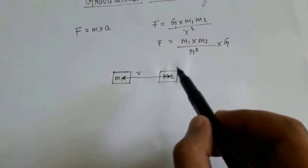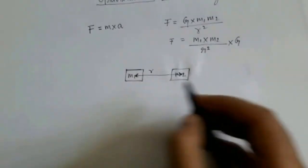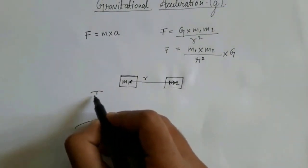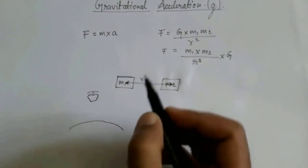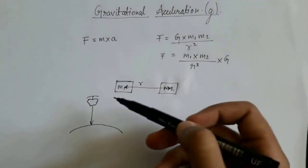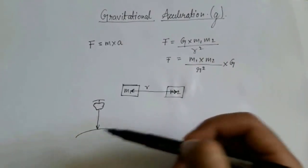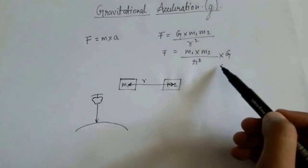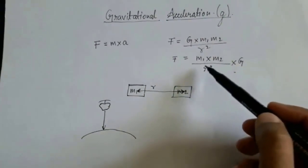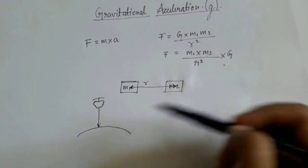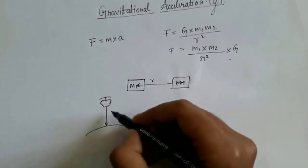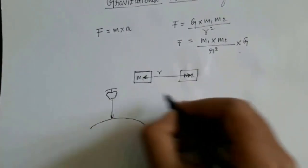Let's explore the application of this. Suppose this is the surface of the Earth and there is an apple. The apple is falling towards the surface of the Earth. What we see in the real world is the apple falling to the surface — not the Earth moving towards the apple. But according to this equation, every body exerts a force on every other body, directly proportional to the product of their masses and inversely proportional to the square of the distance between them. So why is the Earth not moving towards the apple?